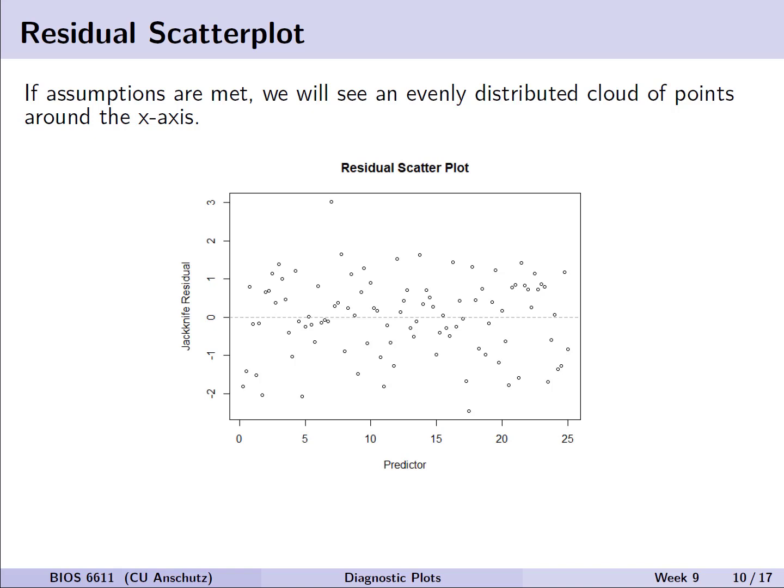If we're looking at the residual scatter plot and the assumptions are met, we should see an evenly distributed cloud of points with no really obvious pattern around the x-axis. Here we're seeing the jackknife residuals are pretty evenly centered around zero, from about negative 2 up to 2, with one possible point that might be an outlier. We'll discuss ways to detect those later in the semester.